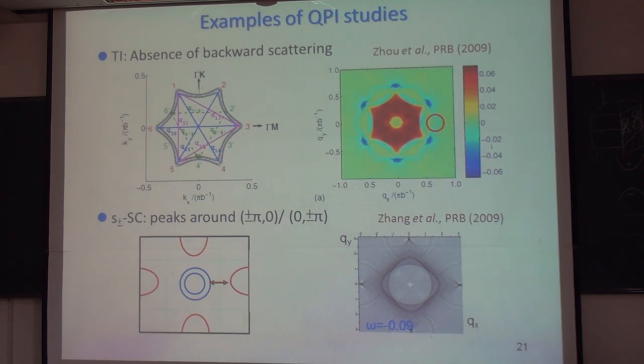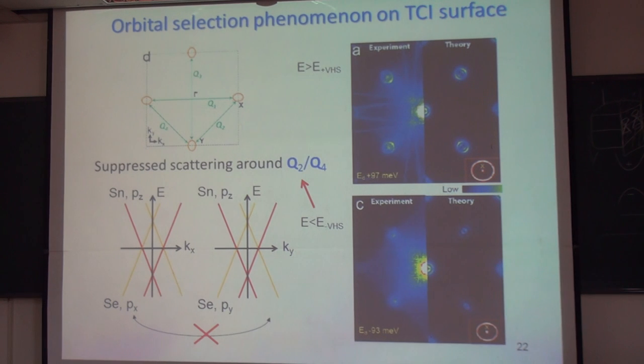And this can be compared with theoretical calculation, which computes impurity-induced local density of states. Okay. And, well, this is some example I'll skip. If you are familiar with quasi-particle interference, let me show you the final, this is the final slide.